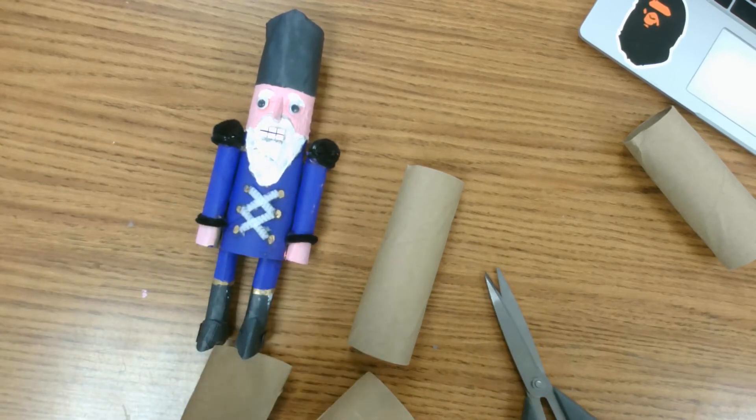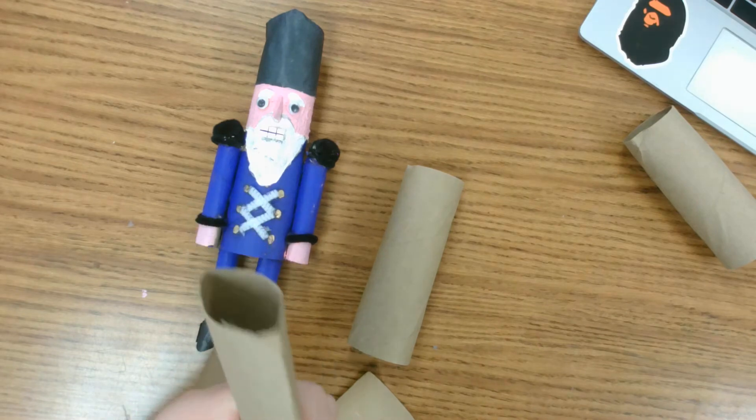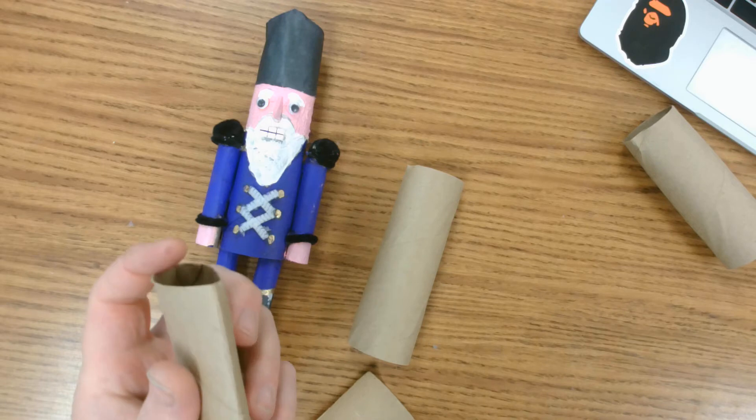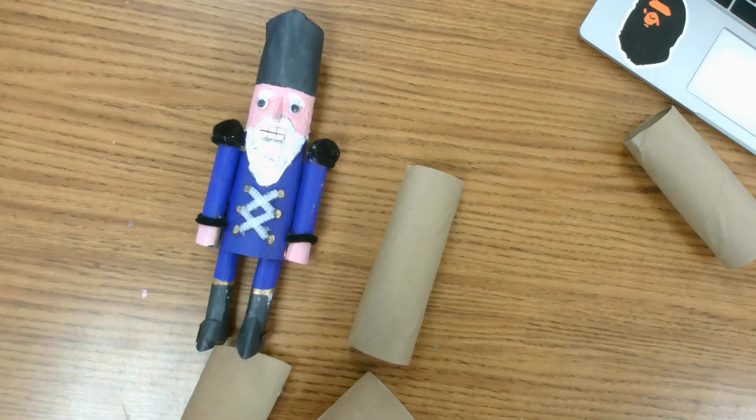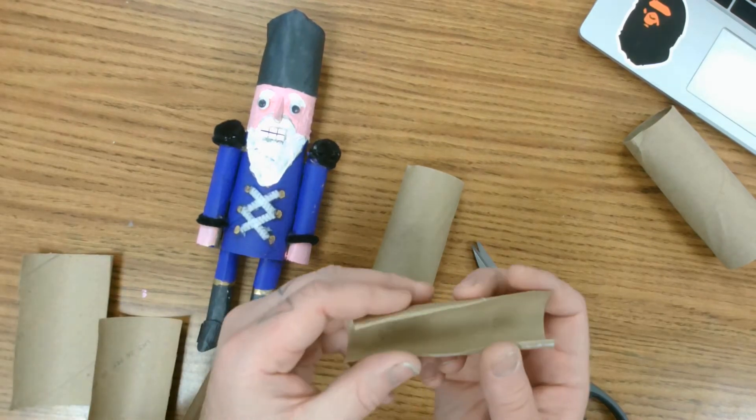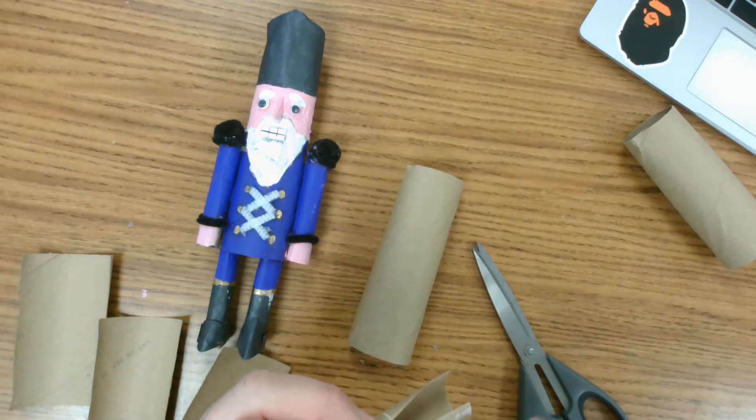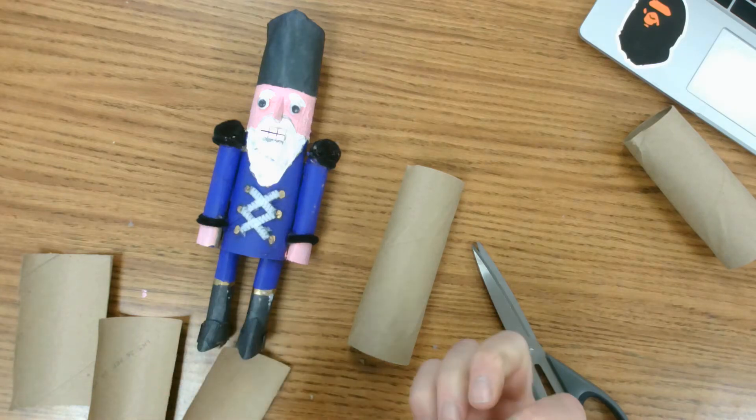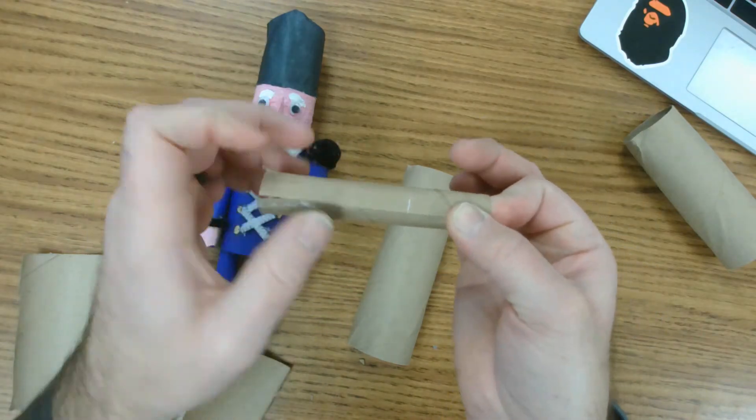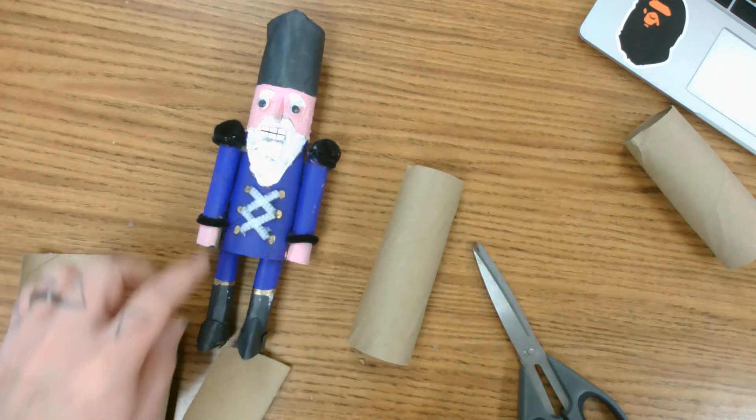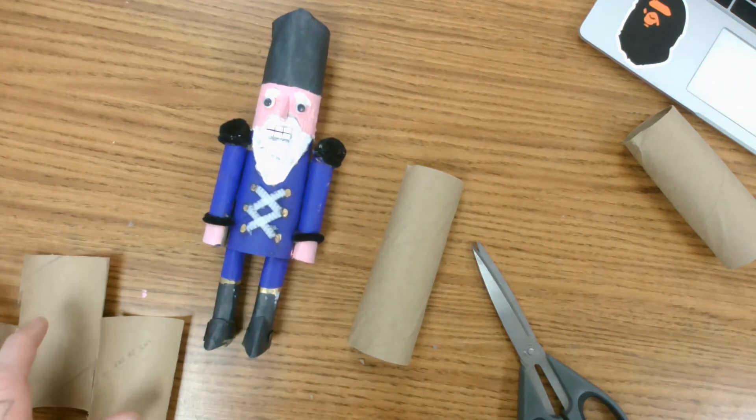Then what you're going to do is take them and roll them, put glue along that edge, some hot glue, and then you're going to glue them into a smaller tube, just like that. If it fits around your finger, that's perfect, and you need four of those—two for the arms, two for the legs.